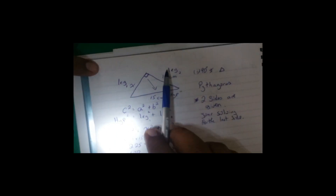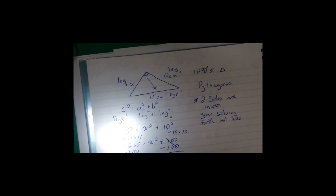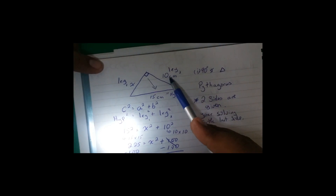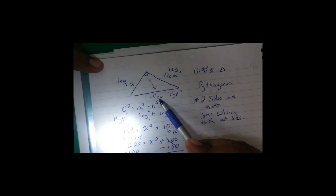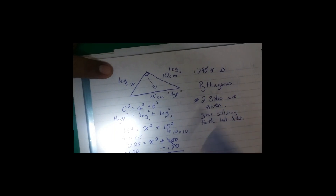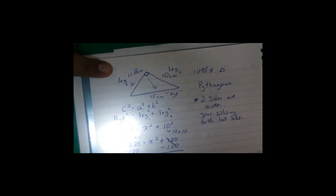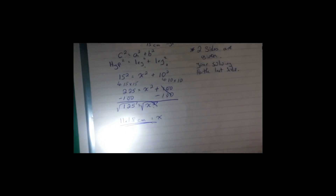So that means if we work out this triangle, this side is 10 cm, one is 15 cm, and the missing side X is 11.18 cm. That is what we have. Let's do another one quickly.